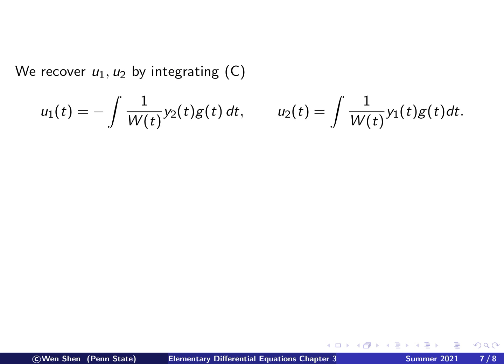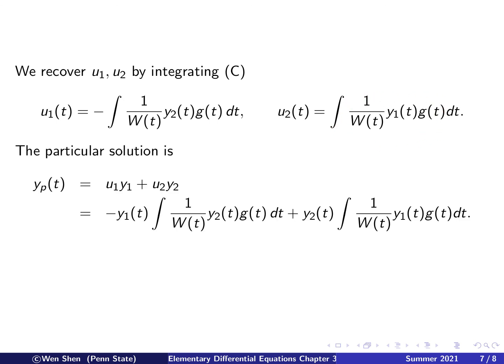Once u1 prime and u2 prime are obtained, we recover u1 and u2 by integrating. So u1 is the integral of u1 prime — pulling the negative sign out — and u2 is the integral of u2 prime. Once u1 and u2 are found, we put them back into the form to get the particular solution: yp equals u1 y1 plus u2 y2, substituting in the expressions for u1 and u2.